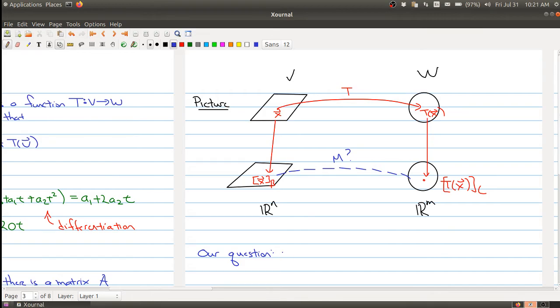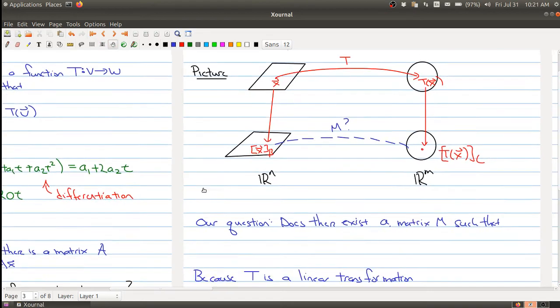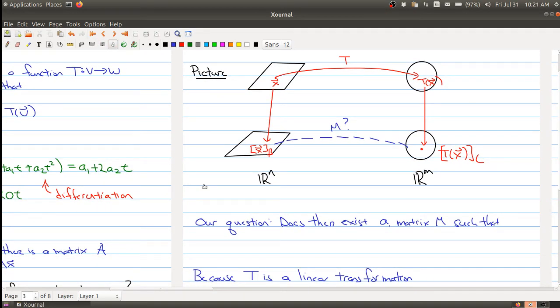So our question is: does there exist a matrix M such that you have the following situation going on? We would have [T(x)]_c, the c-coordinate, so you go from here to here to here.